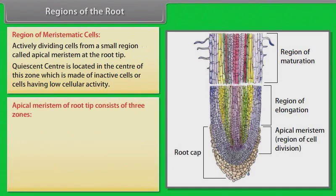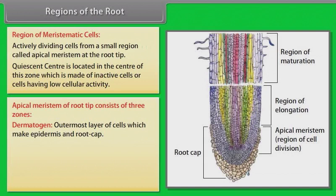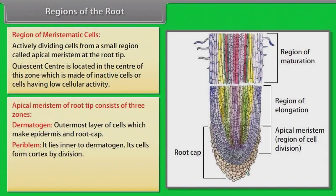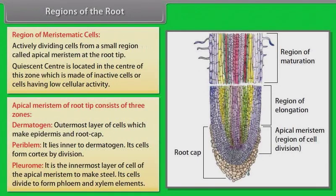Apical meristem of root tip consists of three zones: Dermatogen — the outermost layer of cells which make epidermis and root cap; Periblem — it lies inner to dermatogen and its cells form cortex by division; Plerome — it is the innermost layer of cells of the apical meristem forming the stele, and its cells divide to form phloem and xylem elements.